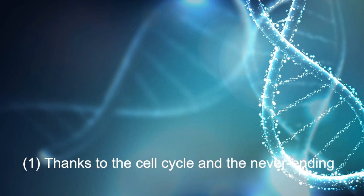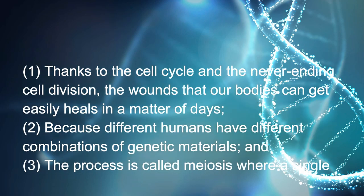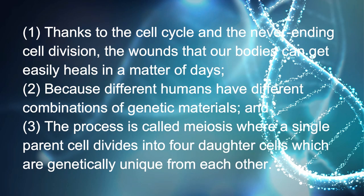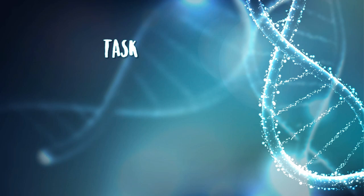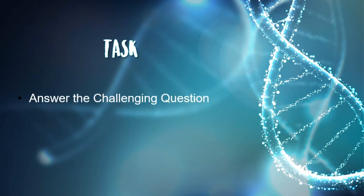Our answers to the questions given are: number one, thanks to the cell cycle and the never-ending cell division, the wounds that our bodies can get easily heal in a matter of days; number two, because different humans have different combinations of genetic materials; and number three, the process is called meiosis, where a single parent cell divides into four daughter cells which are genetically unique from each other.